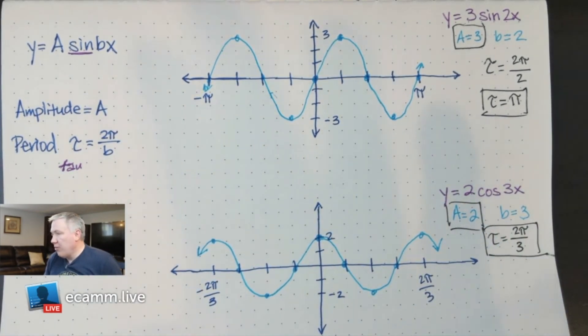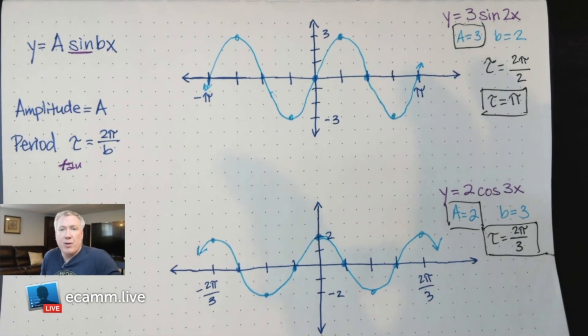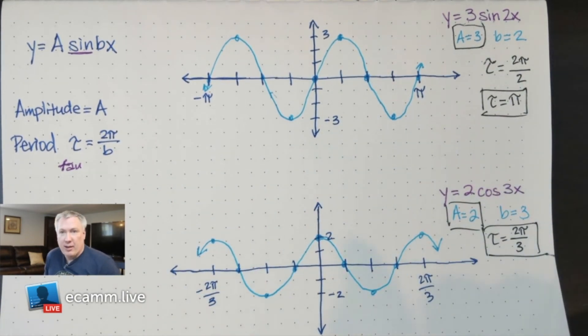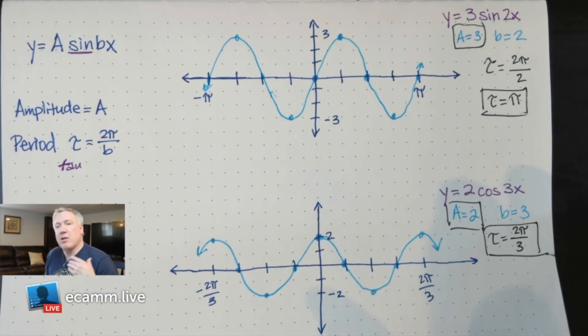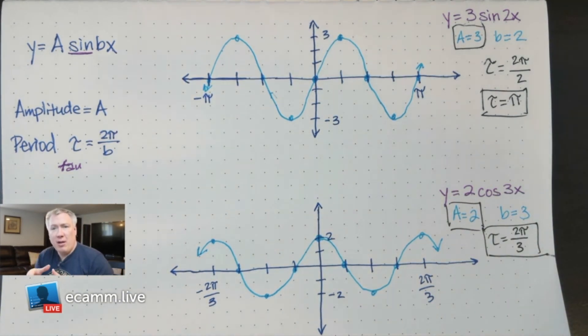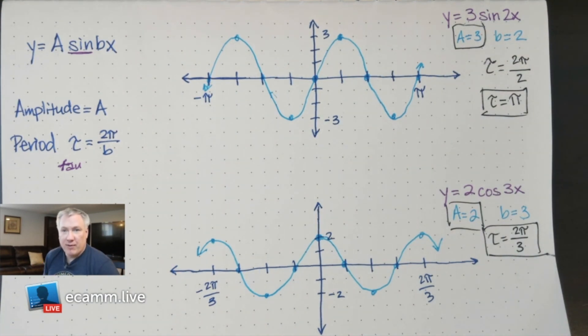Next week, we'll start going into tangent and cotangent and cosecant and secant. But if you get this basic pattern here, you've got your firm foundation for where we move ahead. There's an introduction to graphing sine and cosine using the amplitude and the period. Next week we'll do tangent and cotangent, secant and cosecant. And then a week after that, we'll start talking about what happens when things shift around with vertical shift and phase shift.